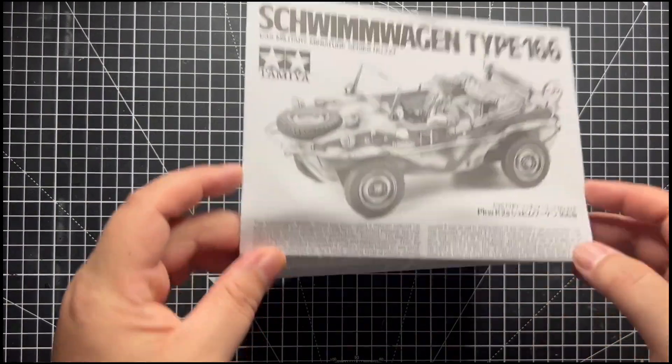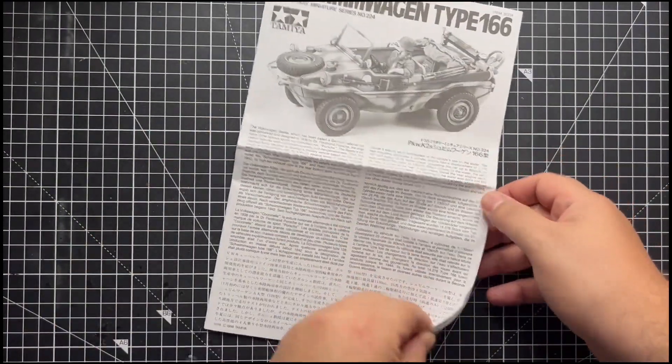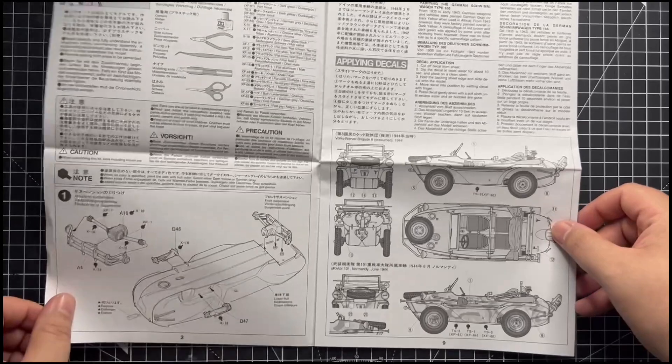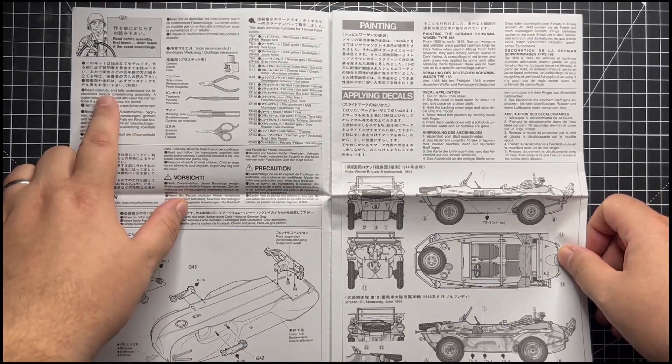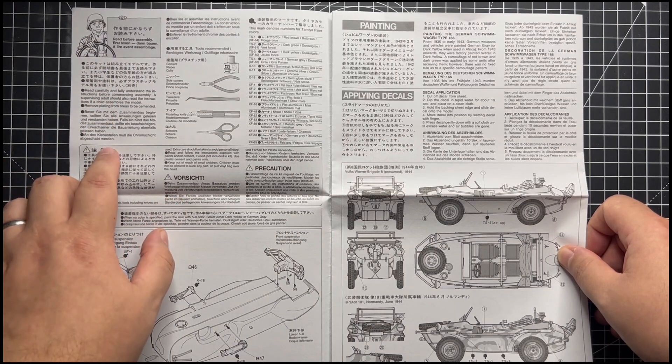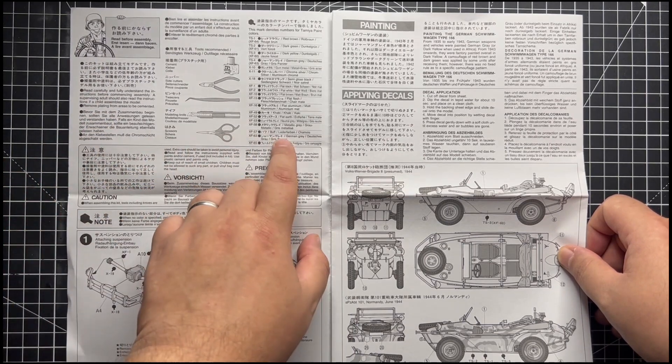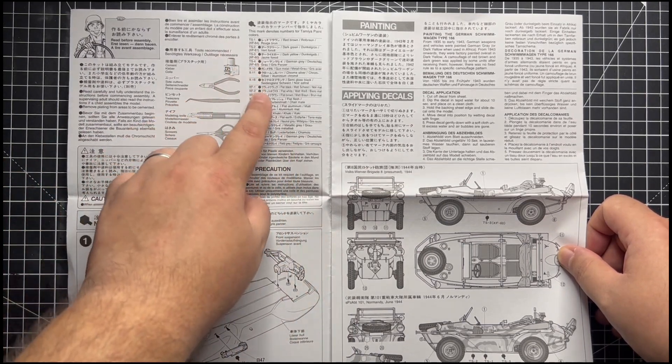So first let's take a look at the instructions. As you can see on the front we've got a very nice picture of the completed model along with the history of the vehicle. On the inside we have the warning labels and we also have some advice and guidance in seven different languages as well as some of the tools you need and some of the paints you'll need to complete the model.